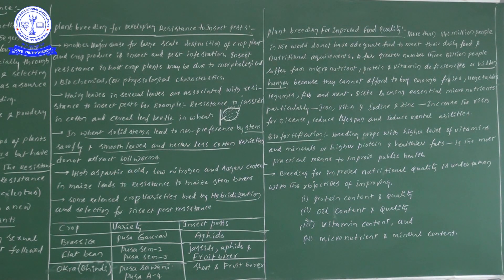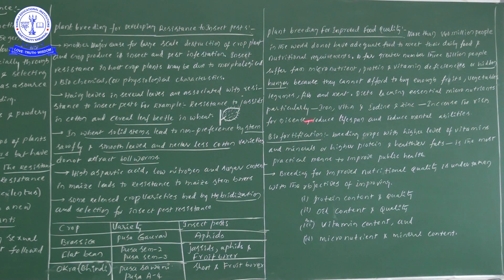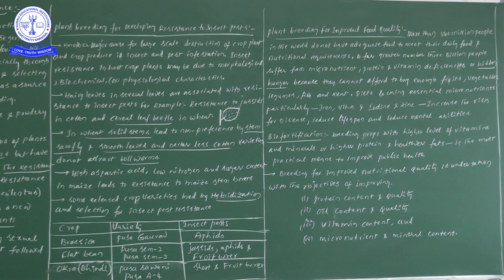That particular condition is called hidden hunger. Their diets are lacking essential micronutrients — particularly iron, vitamin A, iodine and zinc. These four micronutrients are definitely required for each and every human being. If these four are not present, they increase the risk of disease, reduce the lifespan and reduce mental abilities.